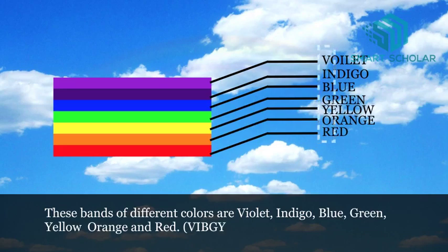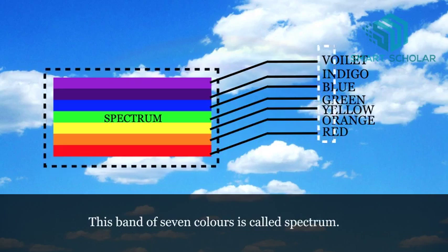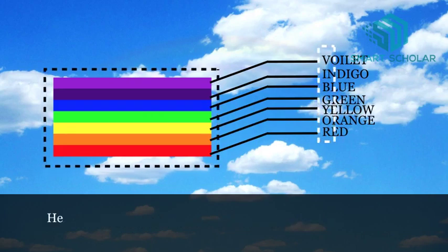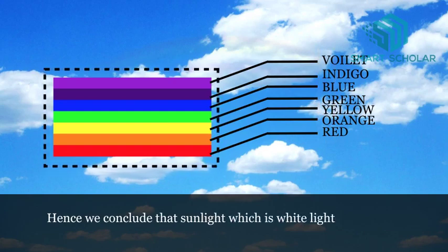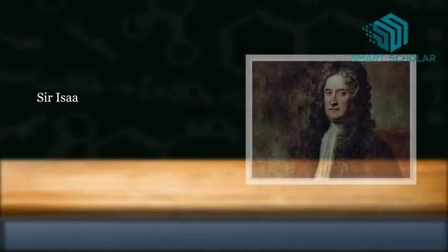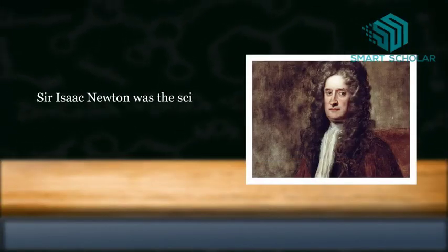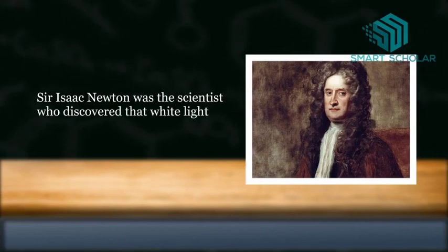This band of seven colors is called spectrum. Hence we conclude that sunlight, which is white light, consists of seven colors. Sir Isaac Newton was the scientist who discovered that white light is composed of seven colors.